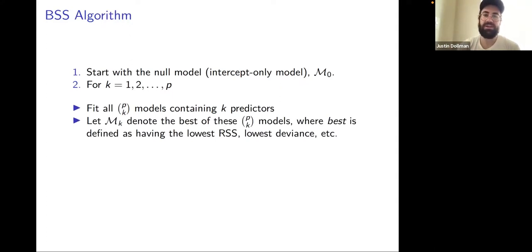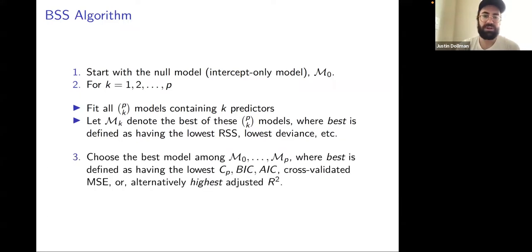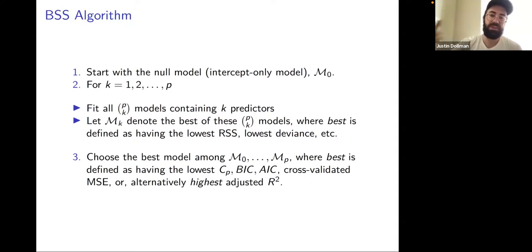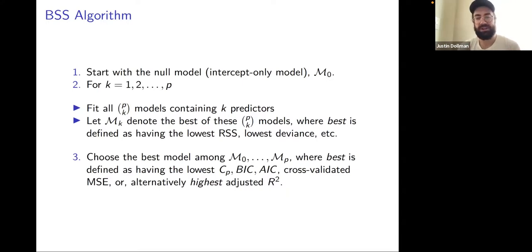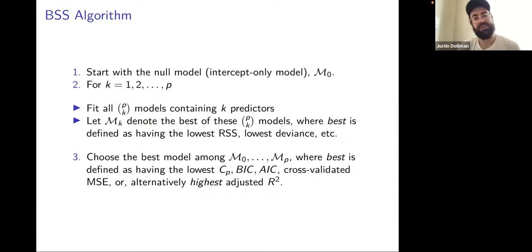You end up with models from the null model all the way to M-sub-P, and then you have to choose among those using a different criterion. You have a lot of criteria at your disposal — Mallows' CP, BIC (Bayesian information criterion), and the AIC (Akaike information criterion). For a model with 11 predictors like the credit dataset, you start with 11 models at the first step, then 55, 165, 330, 462 — it grows quite a bit.